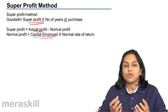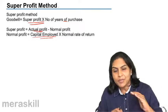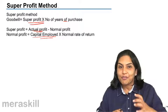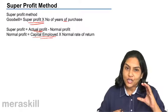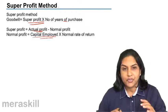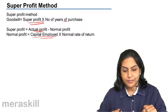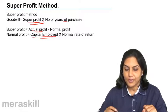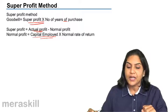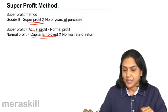That is the amount of profit they should be making. But assuming that the business is making much higher profits, the difference between the actual profit made and the normal profit that it should have earned is super profit. And goodwill is super profit into number of years of purchase.